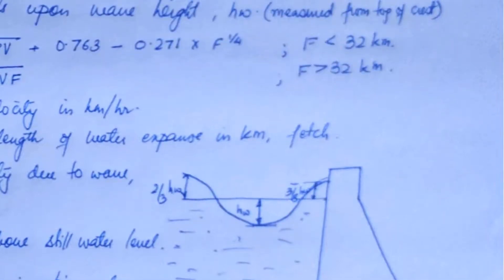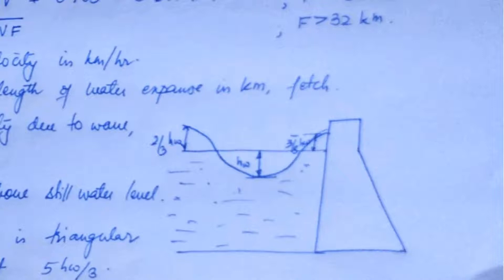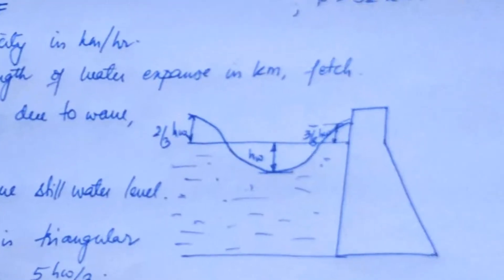You can see here if this is your gravity dam and this is the wave that is actually formed, then what I am saying is that hw is measured from the top of the crest. This is your hw, top of the crest or from the reservoir level to the bottom of trough or to the crest level.